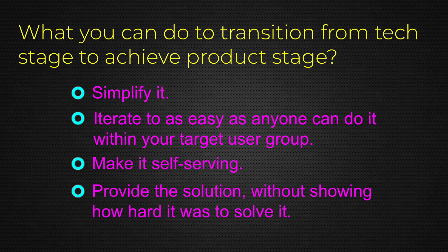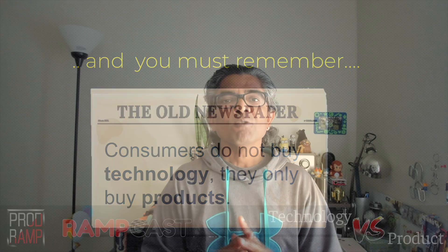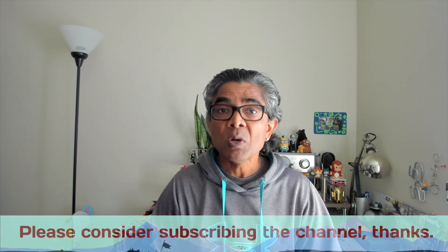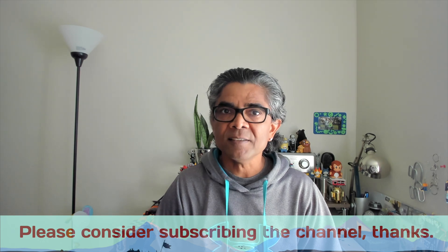The last suggestion: make sure you are solving the problem without explaining how you are doing it or showing how complex the problem was. As engineers, that's a very big pitfall — we try to show users how we arrived at the solution, but the consumer just needs a solution, not the path you took to solve it. If you follow these four suggestions, you can definitely transition your software technology to the product stage. Remember: consumers do not buy technology, they only buy products. Thank you so much for your time in this edition of RampCast — I look forward to seeing you in my next video. Please be good and do good.